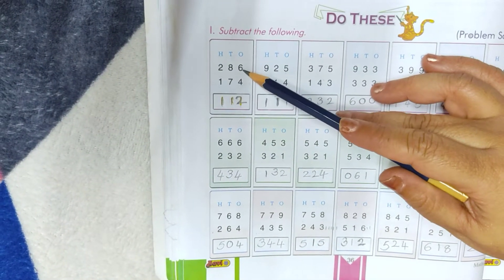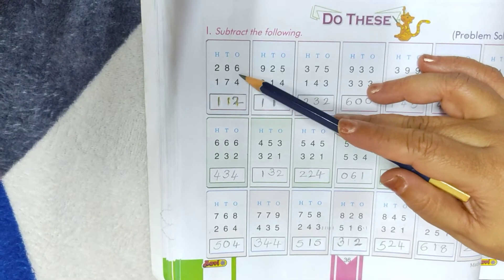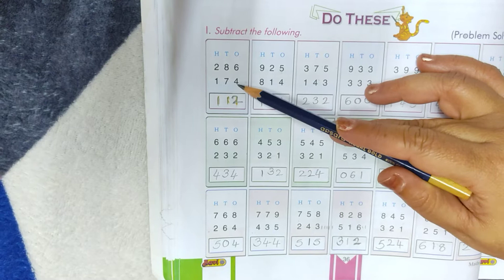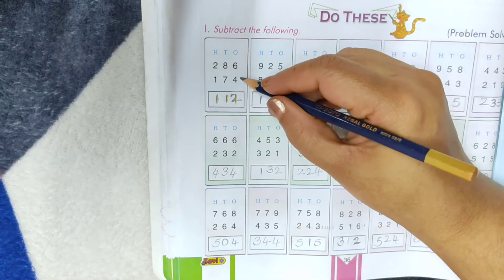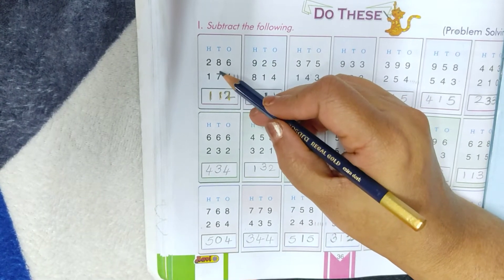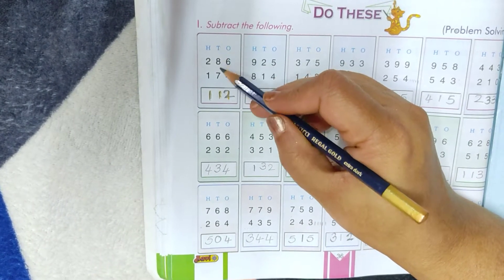First subtract the numbers which are in one's place. See here 6 minus 4. After 4, 5, 6. So 2 is the answer. Then take 10's place.